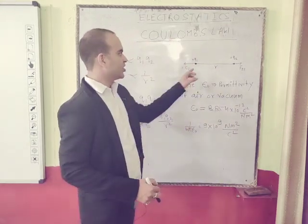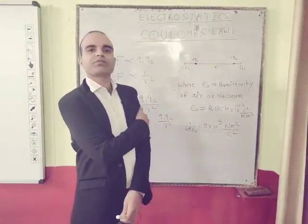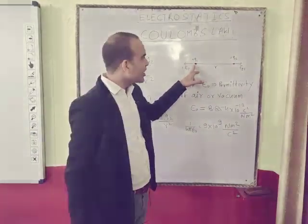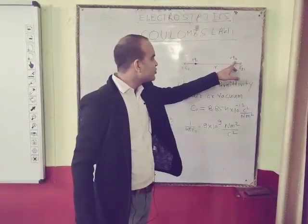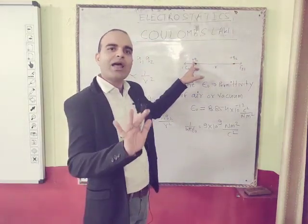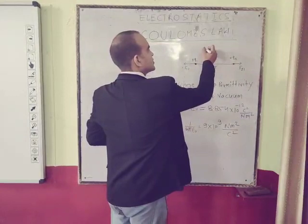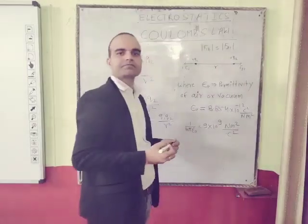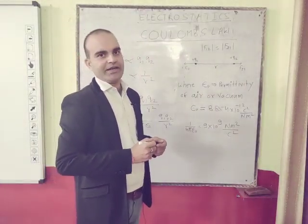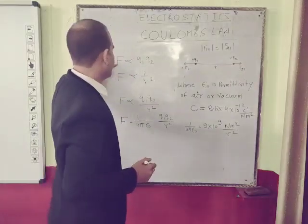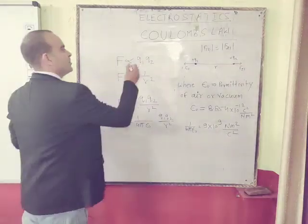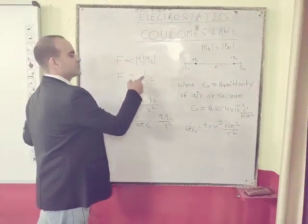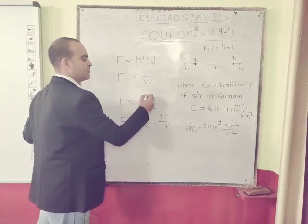According to this, if two point charges Q1 and Q2 are situated R distance apart, then Q1 applies a force on Q2 and Q2 applies a force on Q1 in an equal amount. F12 has equal magnitude to F21 but opposite in direction. Then F is directly proportional to the magnitude of Q1 and Q2, and F is inversely proportional to the square of separation between them.